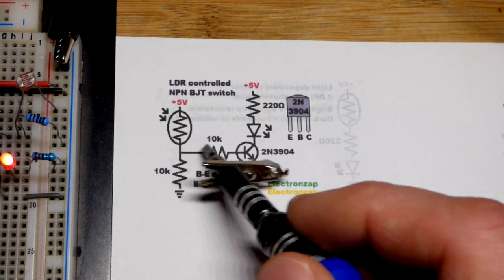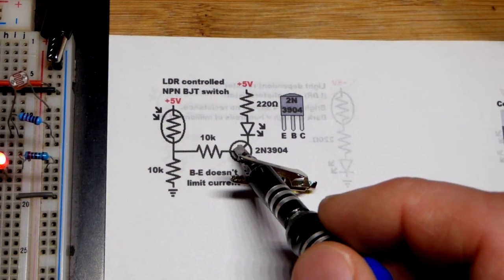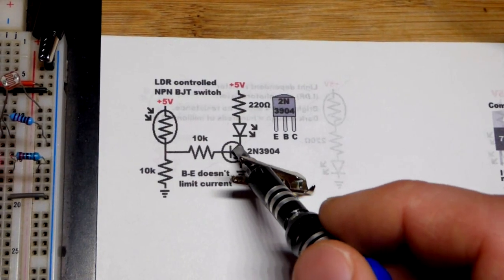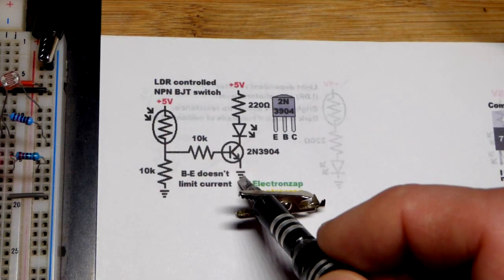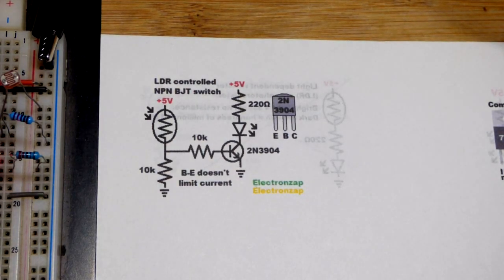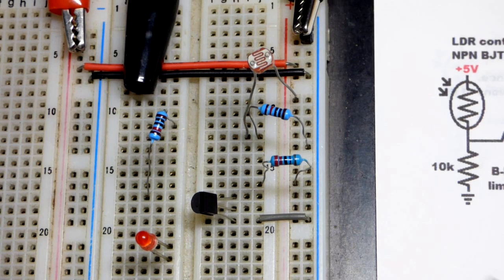You want a resistor there because if you get really bright light on the light dependent resistor, it might get too low, but it's not really going to affect the circuit at all. That little bit of current allows many times the current. The transistor turns on and so does the load.